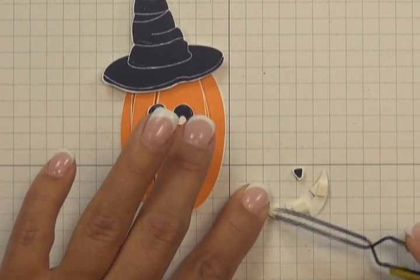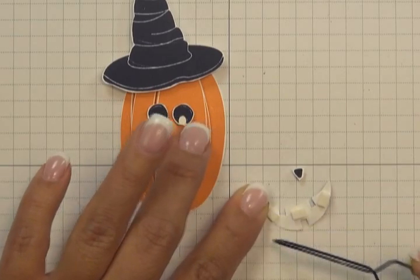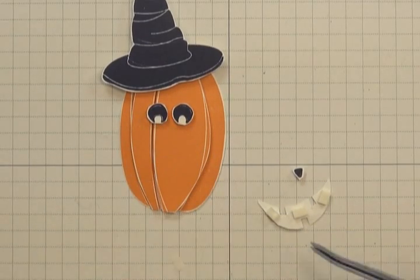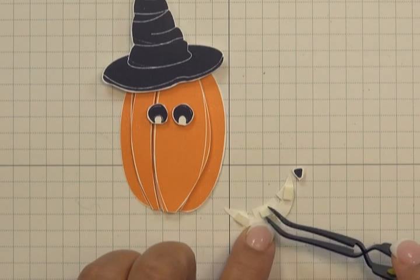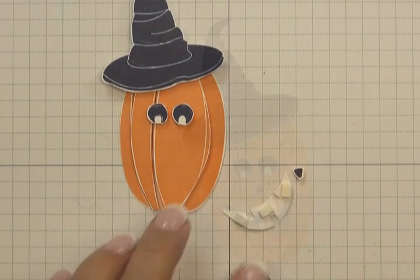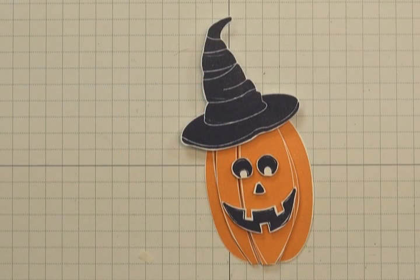And then I'll do the mouth and then the nose last. So the same way you saw me apply the eyes, I'm just removing the backing from the dimensionals and I'm going to attach my face pieces. So there you can see what my pumpkin looks like.